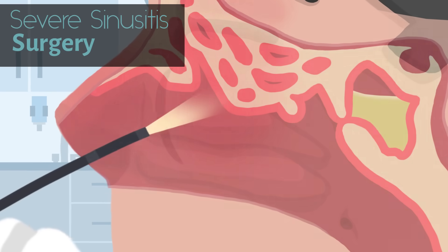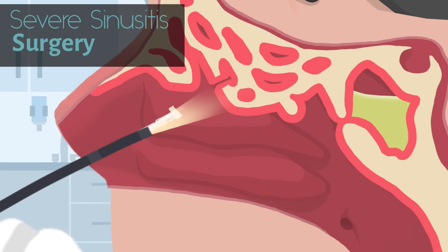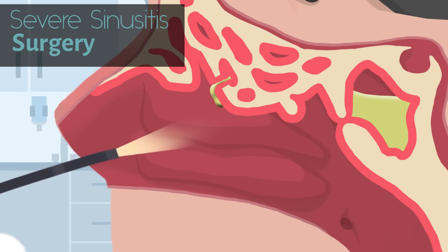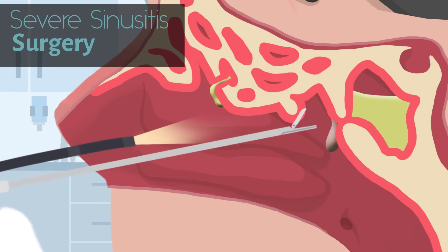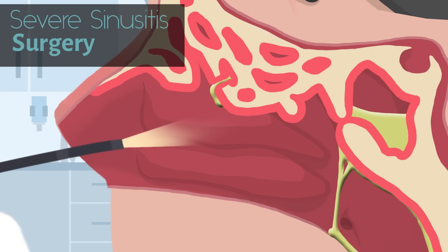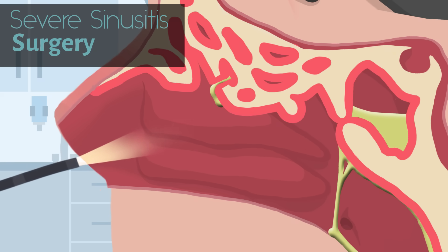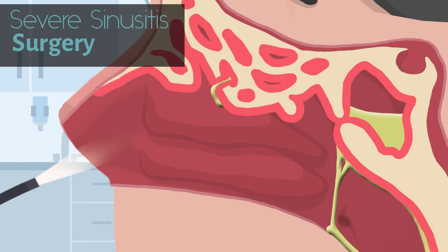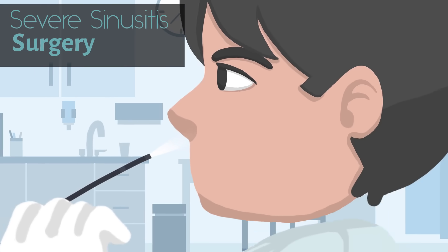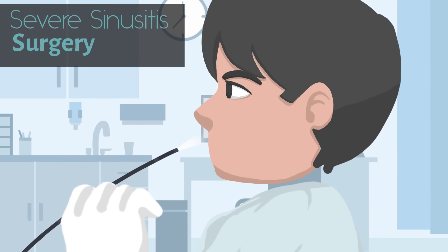Surgery may be done to remove small amounts of bone or other material blocking the sinus openings, or to remove growths blocking sinuses, also called polyps. Normally, a thin lighted tool called an endoscope is inserted through the nose so the doctor can see and remove whatever is blocking the sinuses.